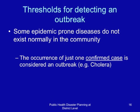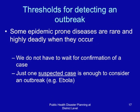Some epidemic-prone diseases are rare and highly deadly when they occur. For these, we do not have to wait for confirmation of a case — just one suspected case is enough to consider an outbreak. An example is Ebola. Therefore, thresholds differ from disease to disease.